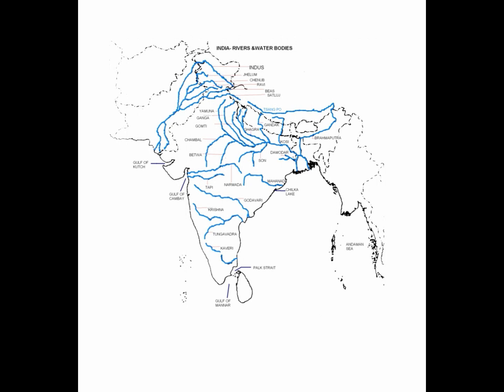Moving on to the western side, there are two rivers close to each other. River number 4, the one towards the south just above Godavari towards the western coast, is Tapi. Above river Tapi is river Narmada, which is river number 5. So to recap: number 1 Kaveri, number 2 Krishna with tributary Tungabhadra, number 3 Godavari, number 4 Tapi, number 5 Narmada.